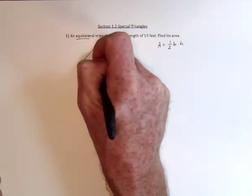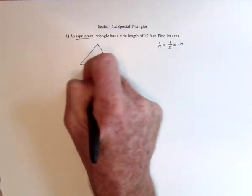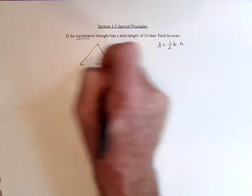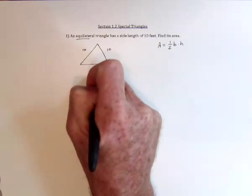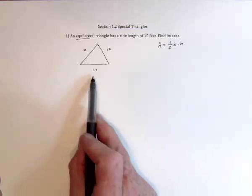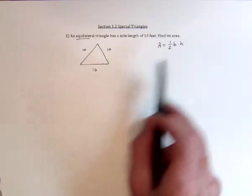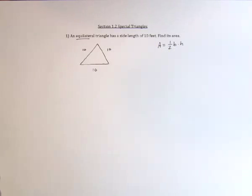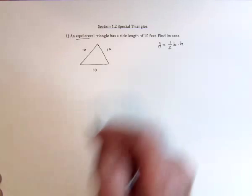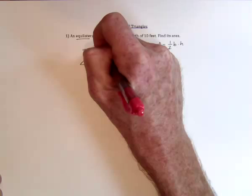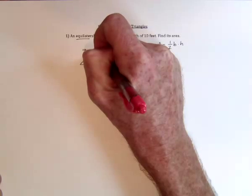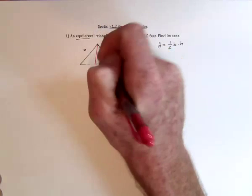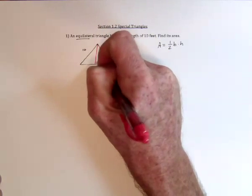So here's the triangle. We've got the base down here is 10. So that's going to be the base. But now we need the height, which is measured perpendicular to the base. So from here, go straight down. And then we need to find this height.